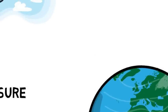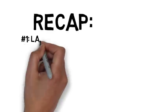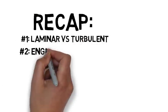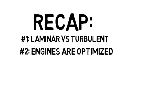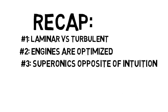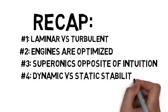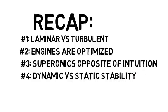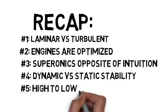Just a quick recap on what we've gone over this whole time. Turbulent flow is high momentum flow and laminar flow is high viscosity flow. Engines are not better or worse, they're just optimized differently. Supersonic flow is often the reverse of our intuition. There's a big difference between static and dynamic stability. And most important of all, air will always move from high to low pressure.